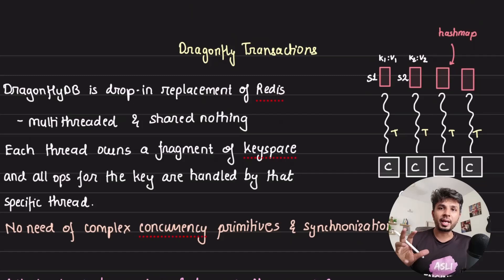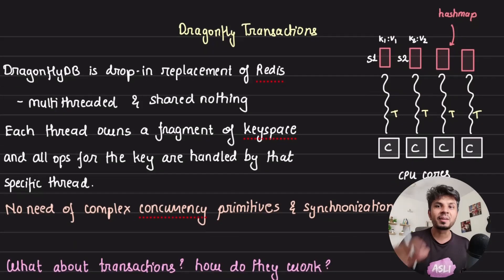In Dragonfly, you do not have a single global hash table that all the threads access. They've adopted a shared-nothing architecture, which means that your data is split across N mutually exclusive hash tables. When a transaction comes in that is affecting multiple keys belonging to different hash tables, that becomes a bit complex on how the transaction needs to be handled.